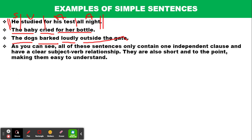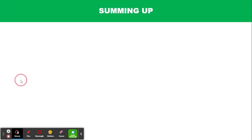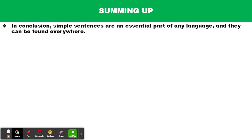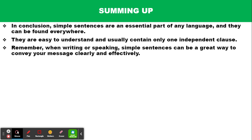As you can see, all of these sentences contain only one independent clause and have a clear subject-verb relationship. They are also short and to the point, making them easy to understand — these are the major characteristics of simple sentences we talked about. Simple sentences are an essential part of any language and can be found everywhere. They are easy to understand and can be a great way to convey your message clearly and effectively.